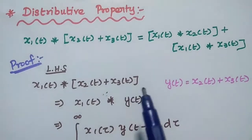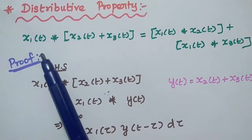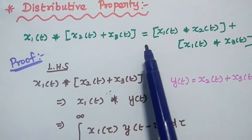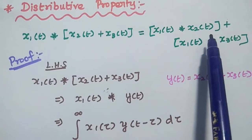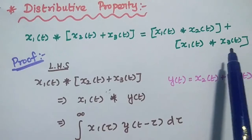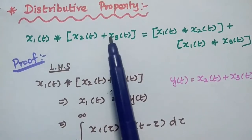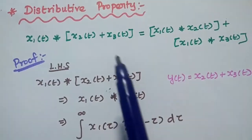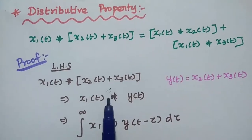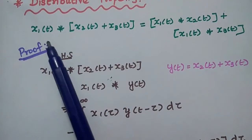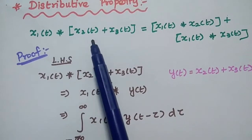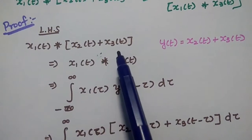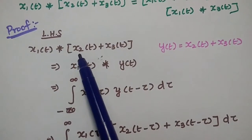The next property is distributive property. The distributive property is given as X1 of t convolved with the sum of X2 of t plus X3 of t, which is equal to X1 of t convolved with X2 of t plus X1 of t convolved with X3 of t. We convolve X1 of t with X2 of t and X3 of t separately and add the results. That is the distributive property. Let's take the left hand side for the proof: X1 of t convolved with X2 of t plus X3 of t.